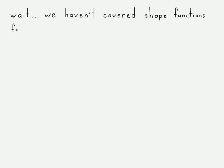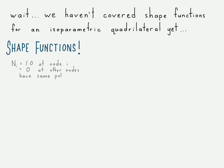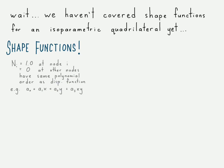We haven't covered the shape functions yet for the isoparametric element, so let's do that now. The definition of a shape function is always the same: it's equal to 1 at the degree of freedom it corresponds to, and 0 at all the other ones. For these nodal shape functions, it's going to be 1 at whatever node it represents and 0 at all other nodes. The polynomial form of these shape functions takes the same form as those displacement functions we looked at earlier.